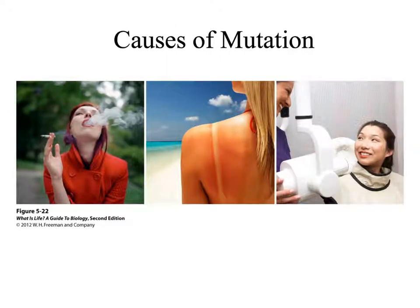Mutations can be caused by many things around us, including chemicals and radiation. We can put the causes of mutations into three major categories.